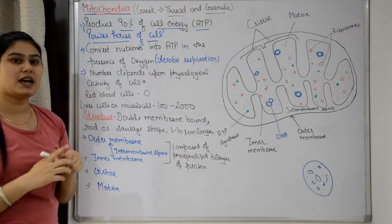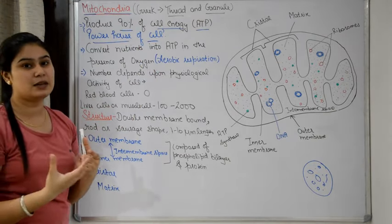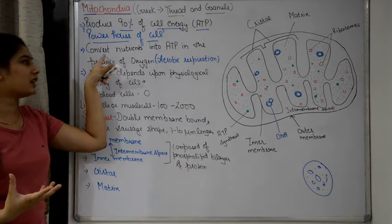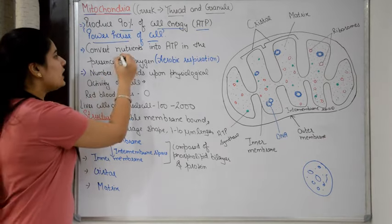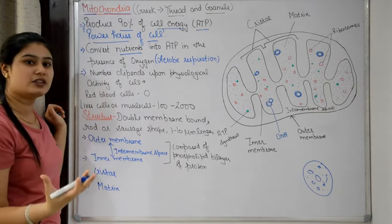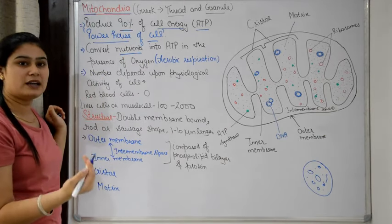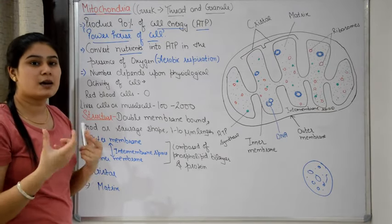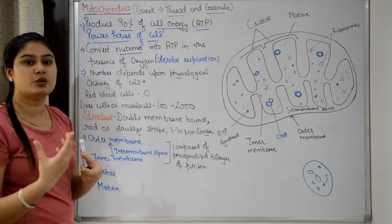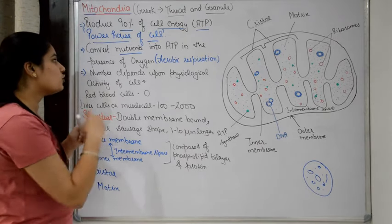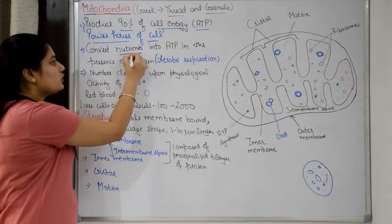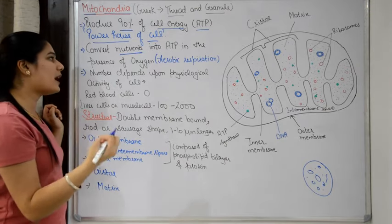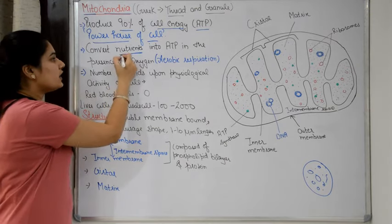So the important function of mitochondria is that it produces ATP. How does ATP get produced? It converts nutrients into energy. The nutrients we take from food — for example, carbohydrates, fats, proteins, lipids, etc. — when we take these nutrients, mitochondria converts them into ATP.